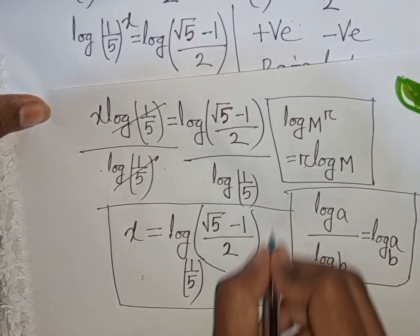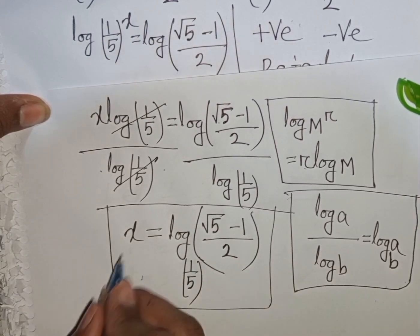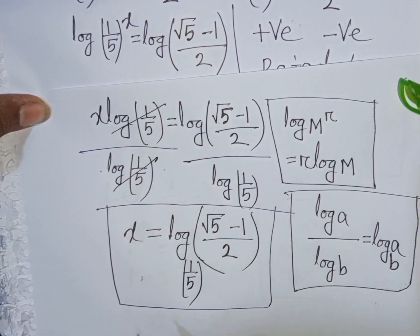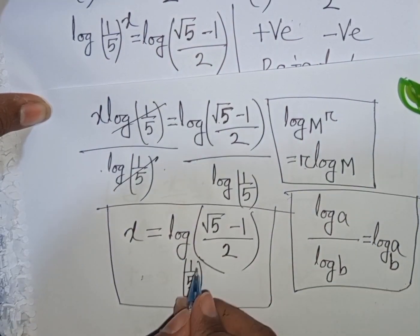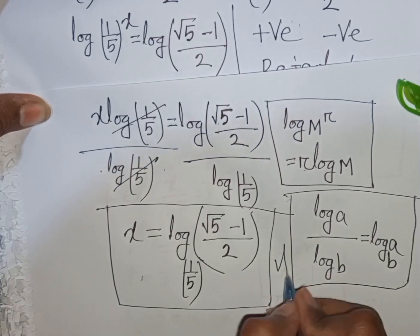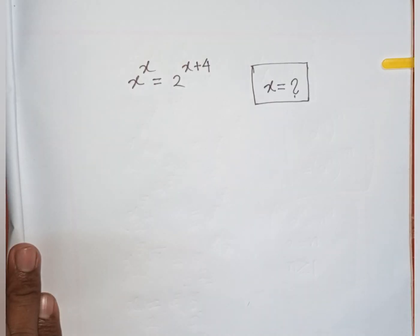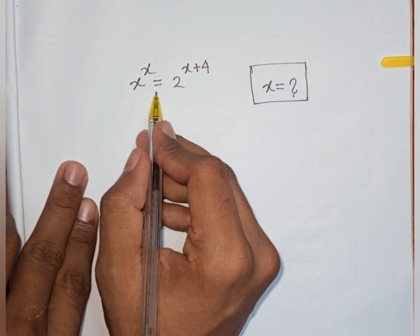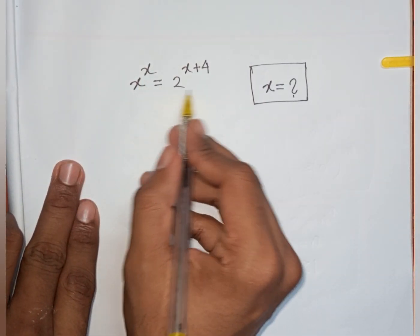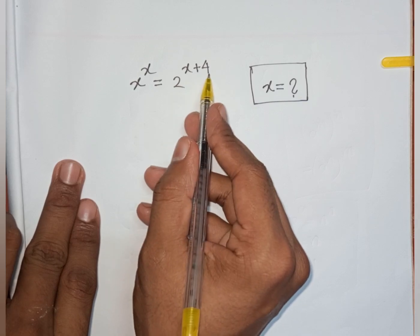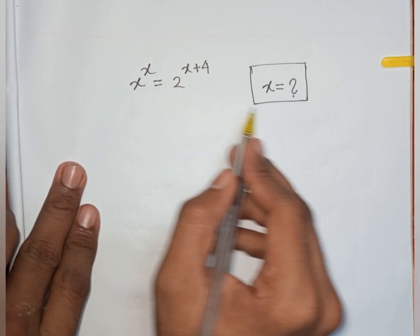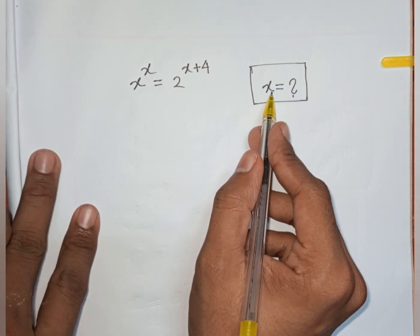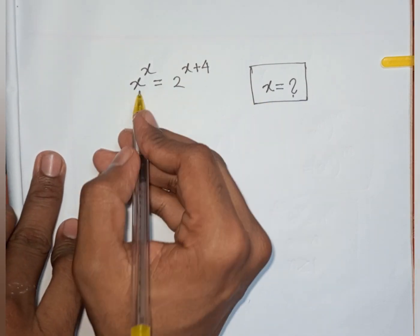So this is the value of x — our final answer for Problem 1. Now, how to solve x power x equals 2 power (x plus 4). Find the value of x.